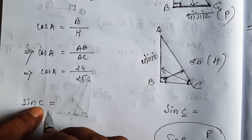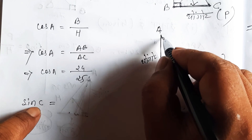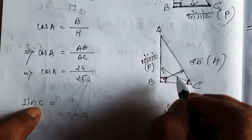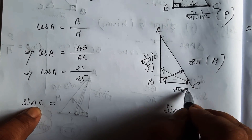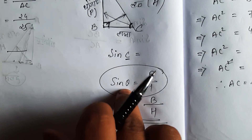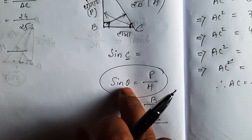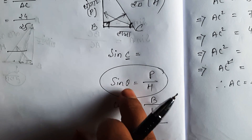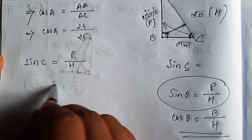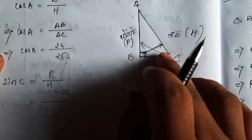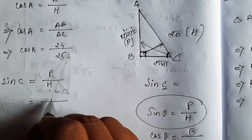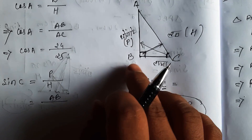Sin C and cos C use the same approach — the opposite side over hypotenuse. Sin theta equals p by h. For angle C, we apply p by h similarly.